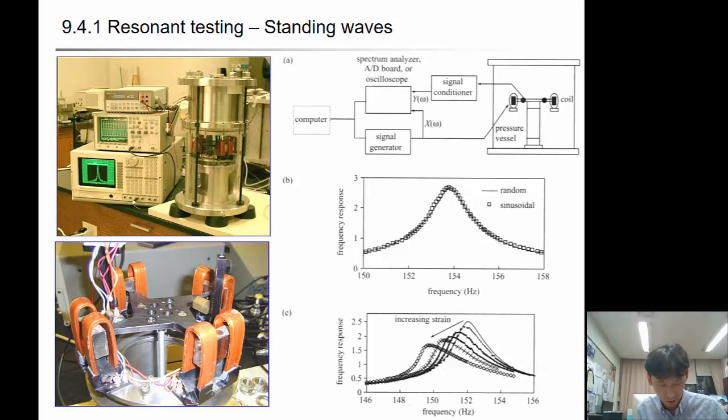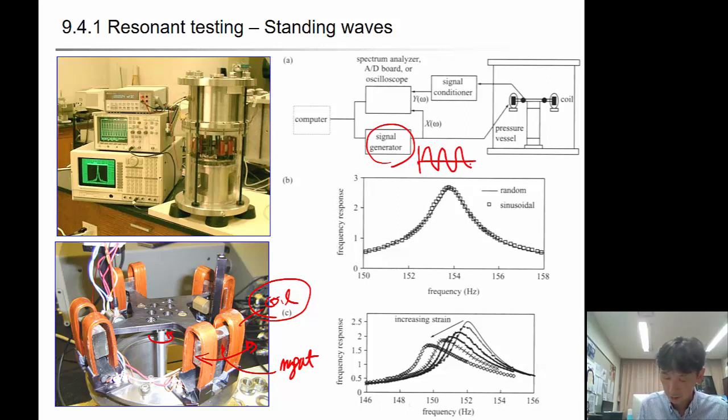This schematic shows the resonant column testing machine. You can see these are the coils, and inside this one is magnet. By applying some known sinusoidal signal to this coil, this magnet will move left and right, back and forth, and that applies oscillating torsion force to the specimen. With the signal generator, you can apply the sinusoidal signal to this coil which generates force to the magnet.